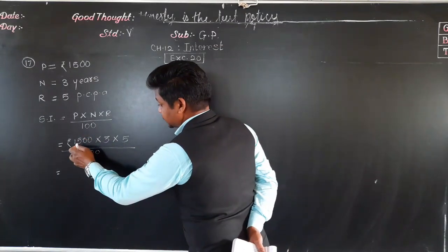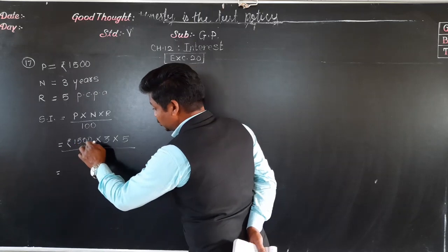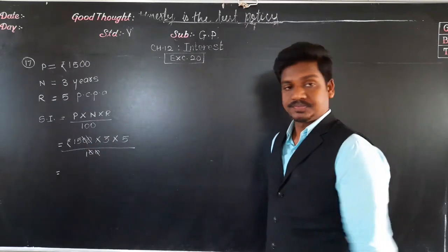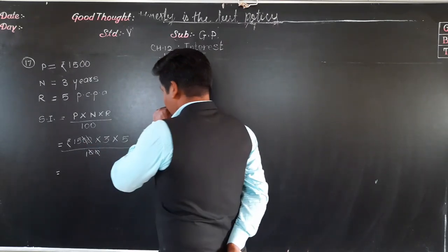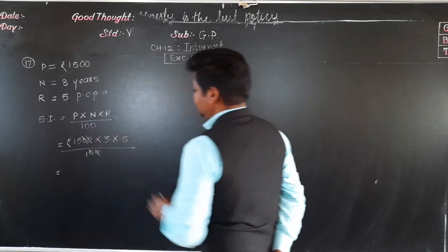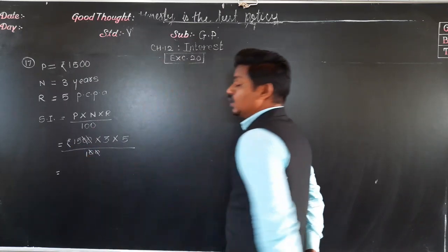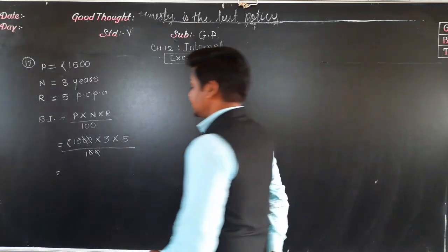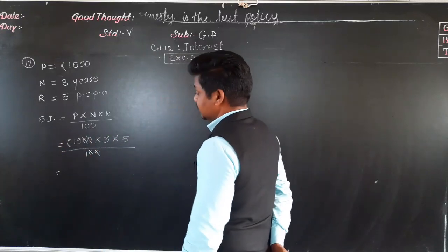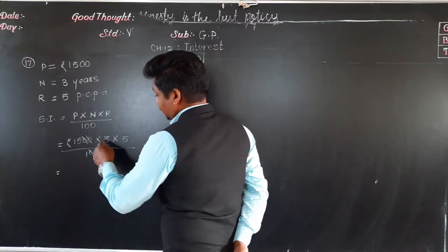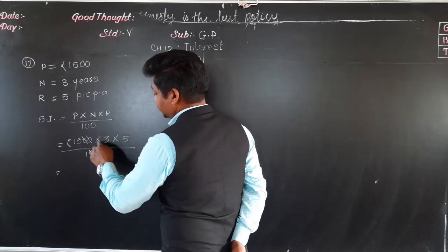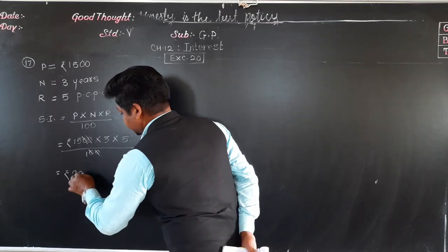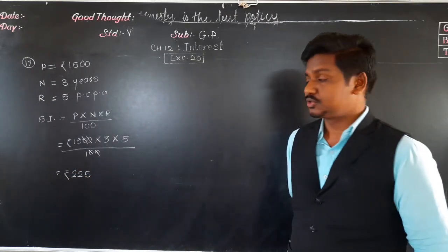In the numerator, 1500 has 2 zeros at the end and in 100 also there are 2 zeros, so these 2 zeros will be cut for those 2 zeros. When the denominator is 1, that means nothing — just multiply the numbers in the numerator. 5 threes are 15, and 15 multiplied by 15 is 225. So this is the interest.